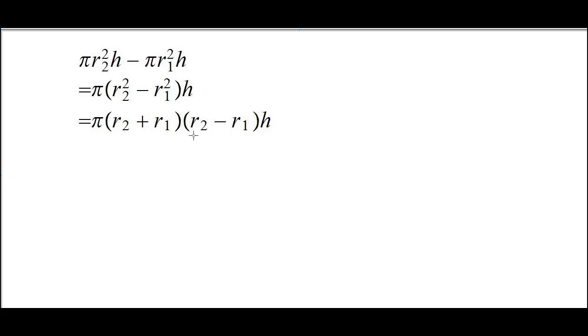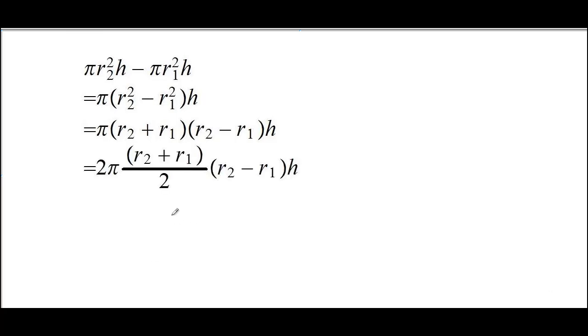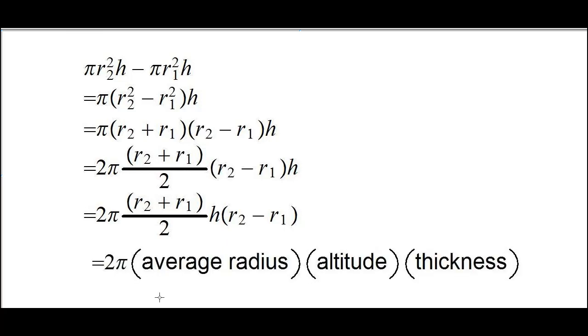Now we multiply and divide by 2, and once we bring H here, what you have is 2π times the average of the radius of the inner cylinder and outer cylinder, then H the altitude of the shell, and this difference will be the thickness of the shell.